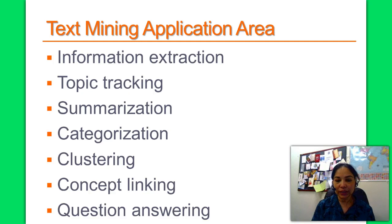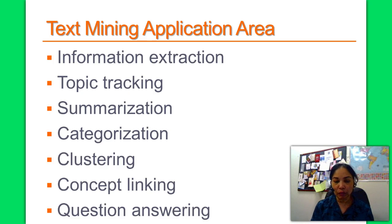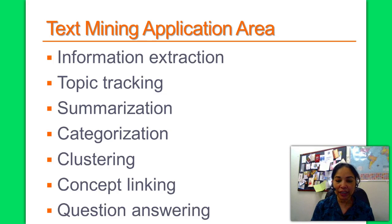Categorization is helpful in identifying the main theme of a document and placing it in a predefined set of categories. Clustering is the grouping of similar documents without having a predefined set of categories. Concept linking connects related documents by identifying their shared concepts. Question answering is finding the best answer to a given question through pattern matching.